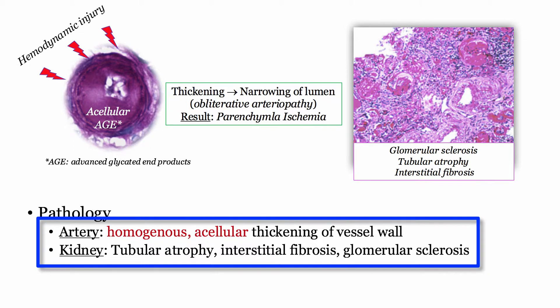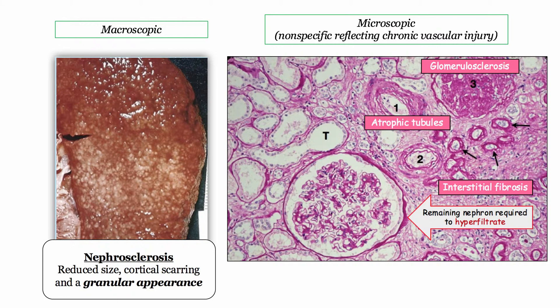You should recognize that the hyalinization may be described as a homogenous acellular thickening. The parenchymal changes are predictable and reflect nonspecific injury including atrophy, interstitial fibrosis, and glomerular fibrosis. Macroscopically, the kidney will have a reduced size, cortical scarring, and that classic granular appearance.